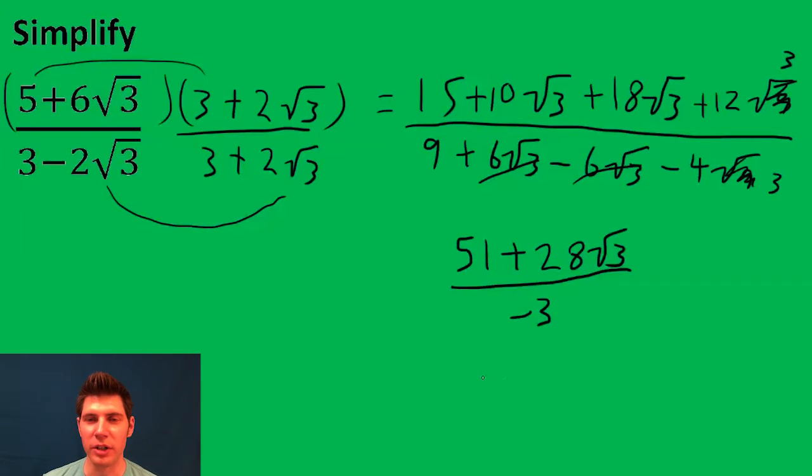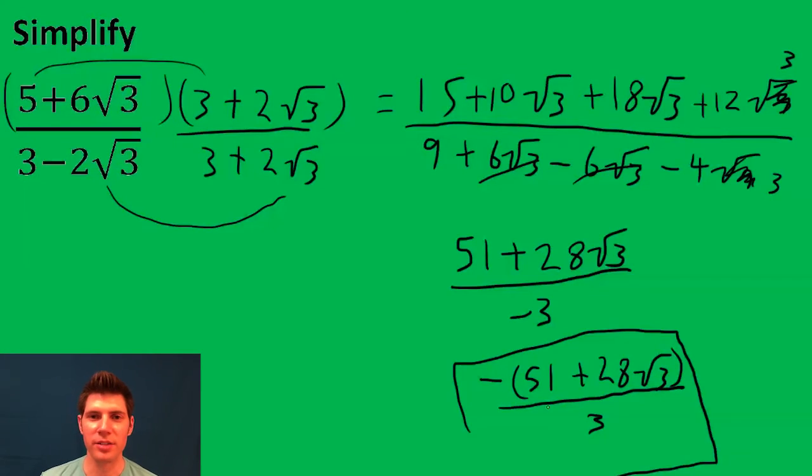To make it look cleaner, we can pull the negative out in front. So it's going to be negative 51 plus 28 root 3, everything over 3. And that is the answer to the question.